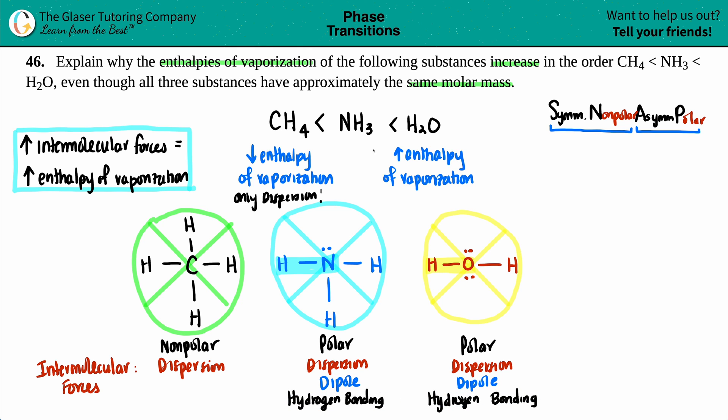But now why the difference? Why is NH3 in the middle and H2O is at the end? Well, it depends on what type of hydrogen bond. The more polar the element in your hydrogen bond, the stronger the bond, the stronger the attraction. Because remember, a hydrogen bond is not an actual covalent bond. It's still a force. It's still an attraction.